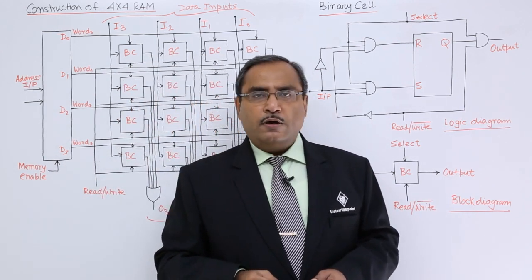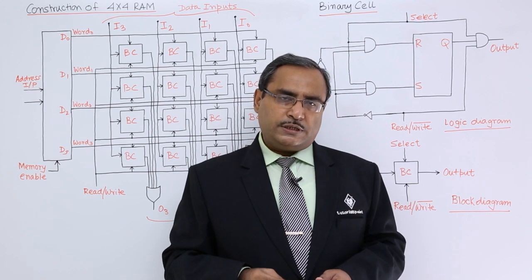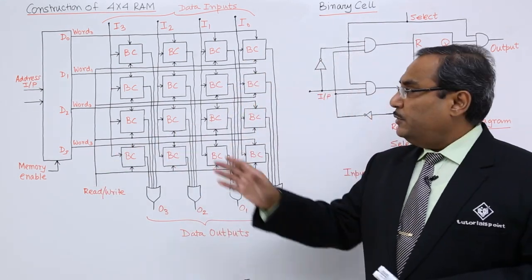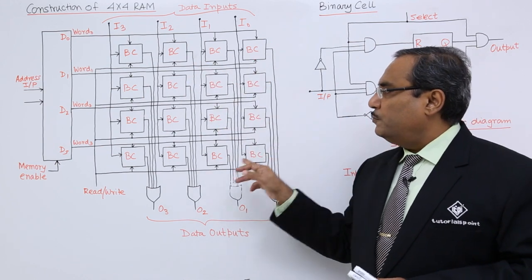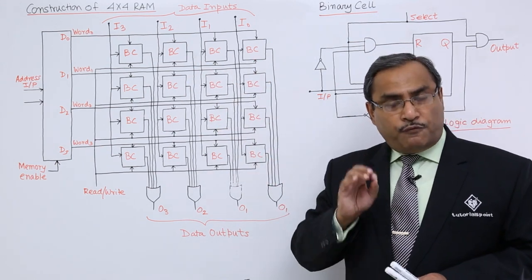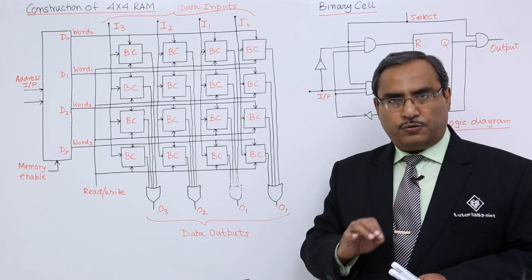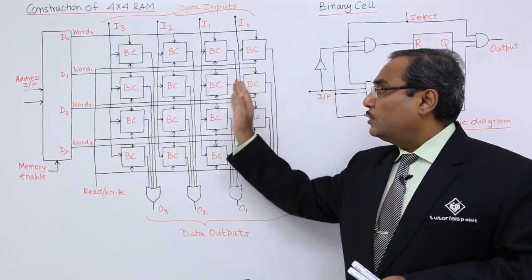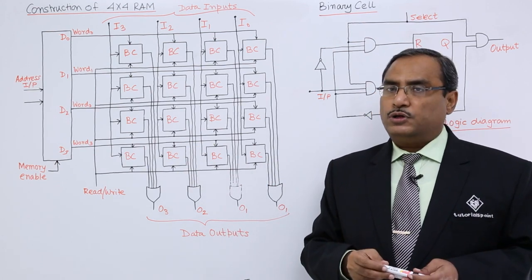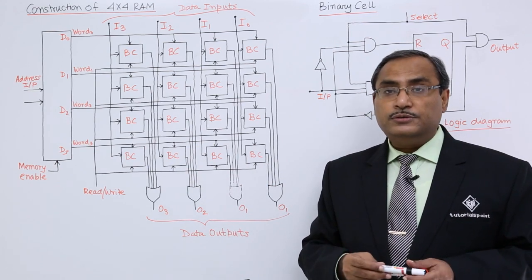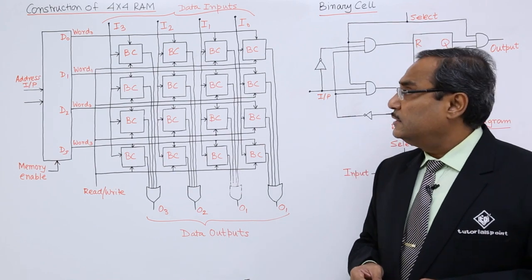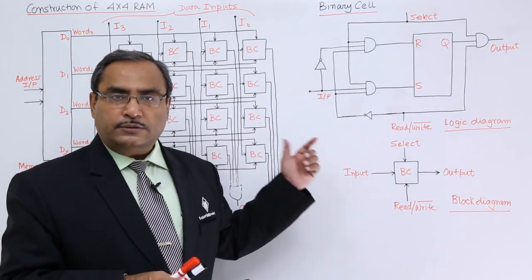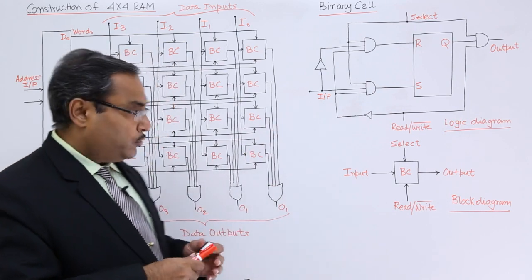We are going to construct a 4×4 RAM circuit. This means we will have 4 binary cells across 4 rows and 4 binary cells across 4 columns, giving us a total of 16 binary cells. Each binary cell has 3 input lines and 1 output line.